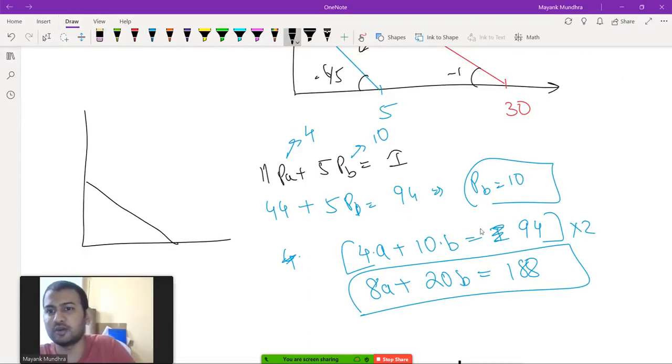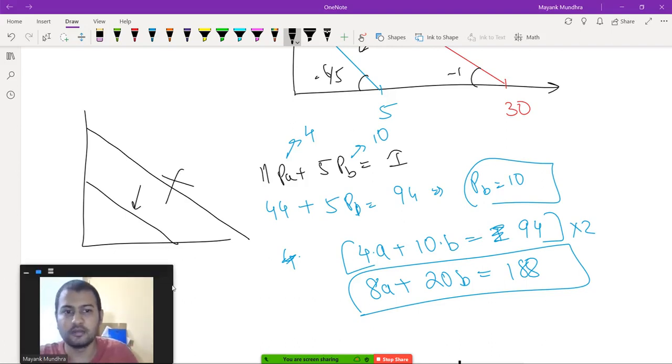The line is still the same. Because if I find the intercepts of the first equation, the intercepts are going to be I by Px, that is 94 by 4, and I by Py.